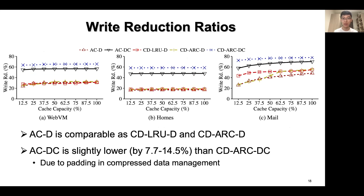We compare write reduction ratios, that is, the percentage of written bytes reduced by deduplication and compression. This metric reflects the ability of All-Story Cache in reducing the I/O overhead. We observe that ACDC achieves comparable write reduction ratios as CDLRUD and CDARCD, which proves the benefits of deduplication. ACDC is also slightly lower than CDARCDC due to padding. Nevertheless, All-Story Cache still achieves considerable write reduction ratios by benefiting from compression.